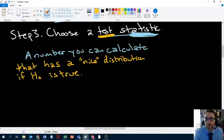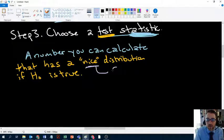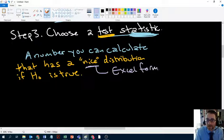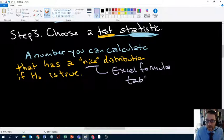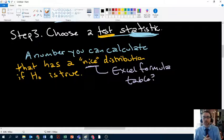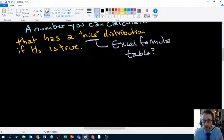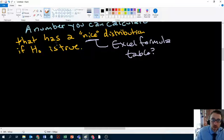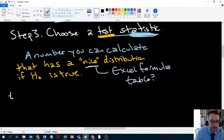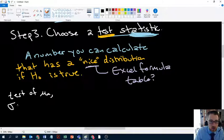A test statistic is a number you can calculate. And that's actually the statistic part. Anything you can calculate from a sample is a statistic. The test part is that it has a nice distribution if H0 is true. So if the null is true, then there's a number we can calculate that should have a nice distribution. What do I mean by nice? What I mean by nice is usually what I'm going to mean is that there's an Excel formula for it, or a table somewhere.